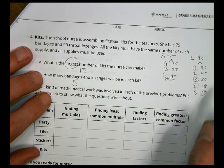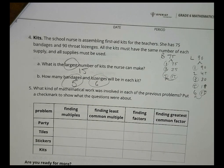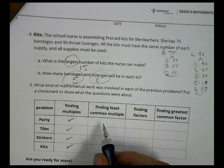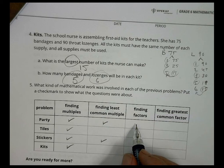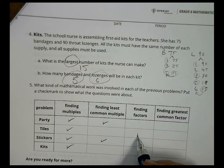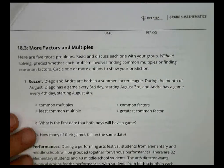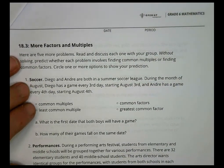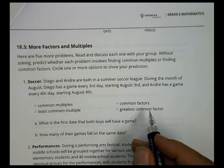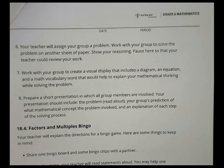The greatest common factor is 15, meaning she can make 15 kits — each with 5 bandages and 6 lozenges. To summarize the lesson: for the party and sticker problems we found the least common multiple by listing multiples; for the tiles and first aid kit problems we found the greatest common factor by listing factors. There are more practice problems (18.3) to work on with your group.